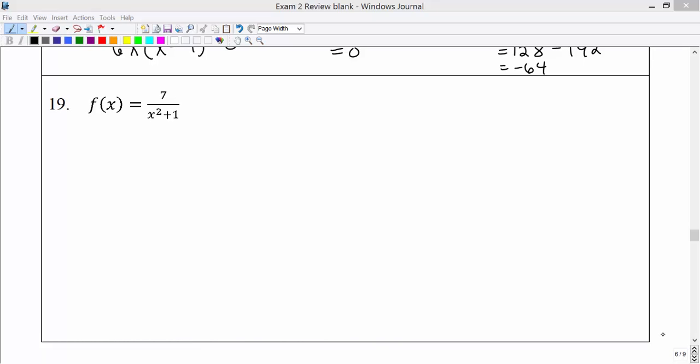Once again, we're asked to find the points on the graph that have a horizontal tangent line, which means we're looking for the points on the graph that have a tangent line with a slope of 0.